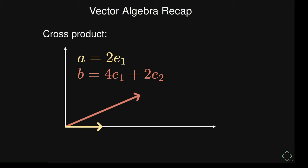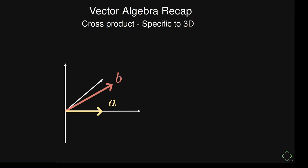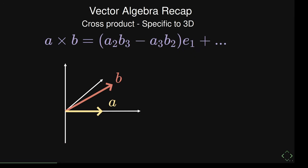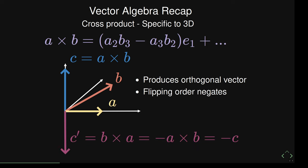Then the cross product — it doesn't really work in two dimensions, so it's specific to three dimensions. There's this formula most of us have memorized. It produces a third vector that is orthogonal to the two input vectors. Another interesting fact: if you flip the two vectors and do the same product, you pick up a negative sign and produce the vector in the opposite direction.